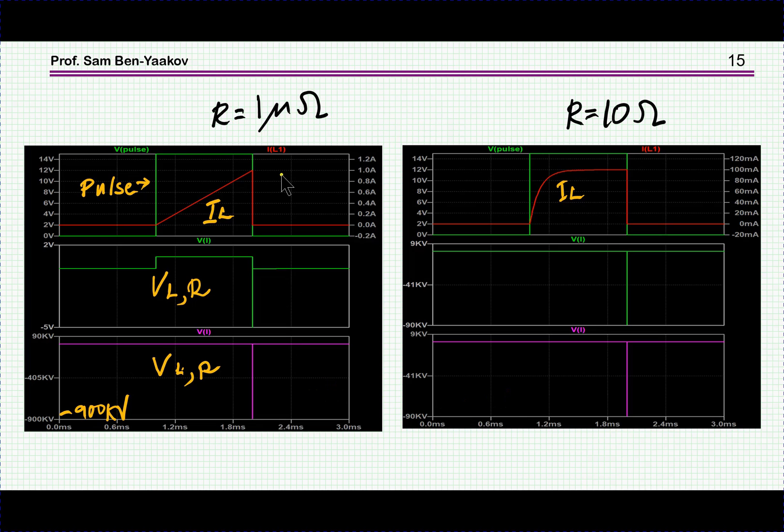So here are the results. This is for one micro-ohm, that is no resistance. We see here the control pulse of the switch. We see the current going up, and obviously if the pulse would be longer it would be going up to a very high value limited by the one micro-ohm which we don't see here.